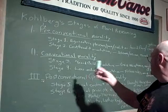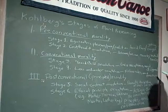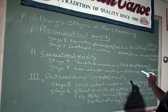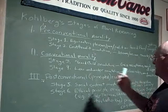Conventional morality, stage 3: good child orientation — gain acceptance, avoid disapproval. Stage 4: law and order orientation — follow rules, avoid penalties.